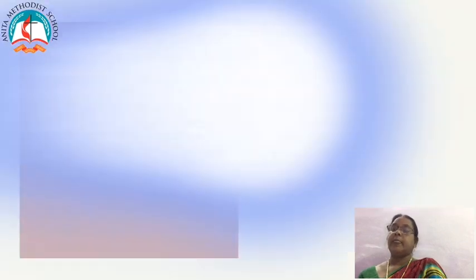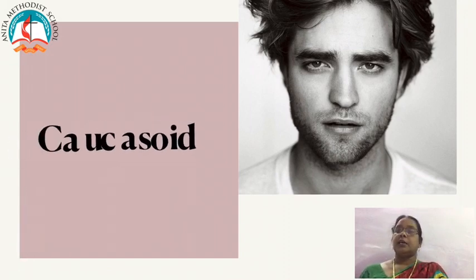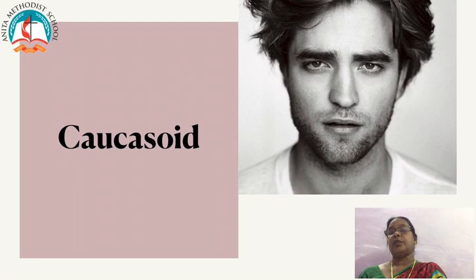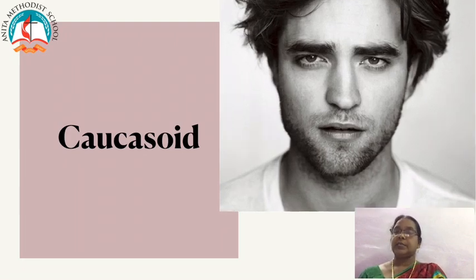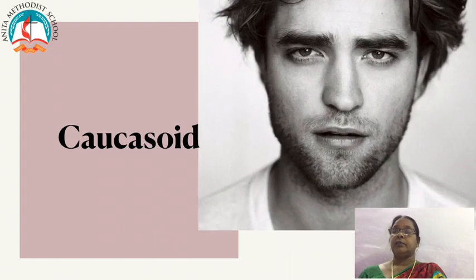First, about Caucasoids. They are also known as the European race because Caucasoids are mostly found in Europe. These people have fair skin, dark brown eyes, wavy hair, and a narrow nose. They are also found in Eurasia.